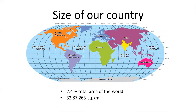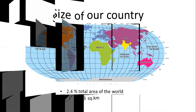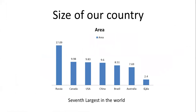If you see the map, India is shown in yellow — a small piece that is part of Asia. In terms of size, it is 2.4% of the total area of the world's land, and 32,87,263 square kilometers. Looking at this graph, India stands at the seventh position — it is the seventh largest country in the world. So: 2.4%, seventh largest country in the world.